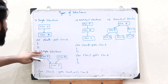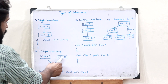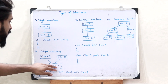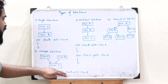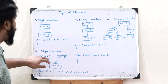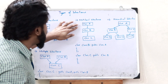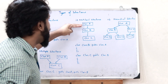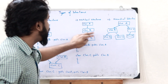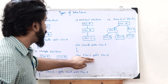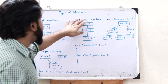In single inheritance, class B acquires the properties of class A — that is the basic form of inheritance. Next, we have multiple inheritance, where a single class inherits properties from multiple base classes. That is, class C will have the properties of both class A and class B. After that, we have multi-level inheritance, where first class B inherits the properties of class A, and then class C inherits the properties of class B, so the inheritance goes through different levels.